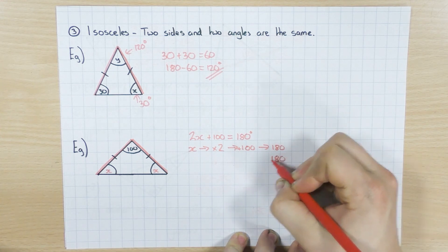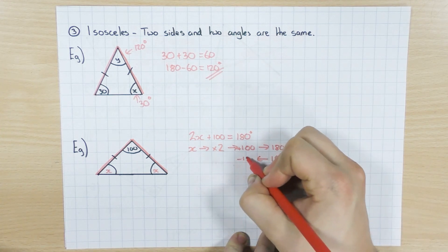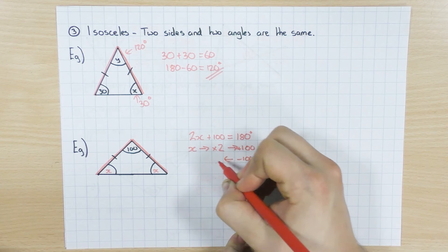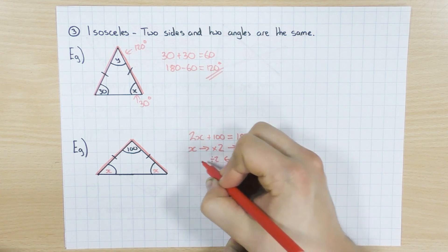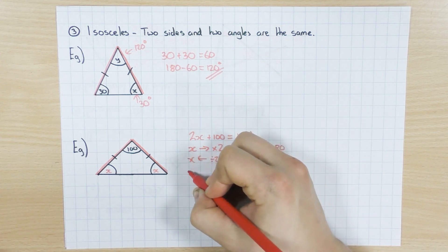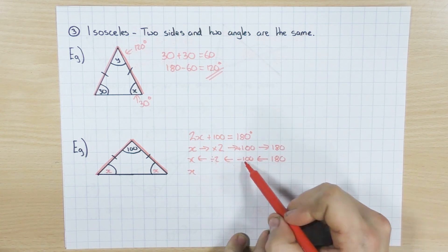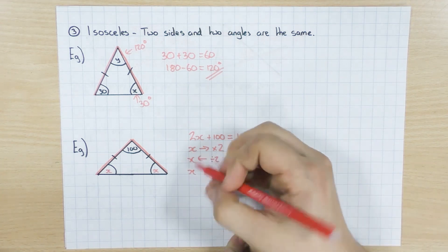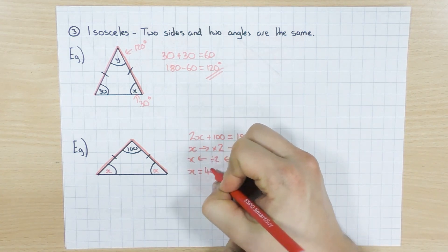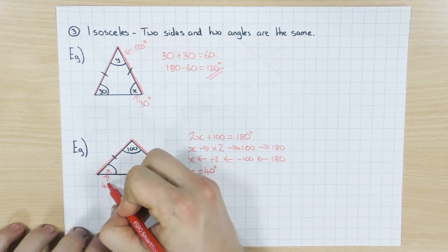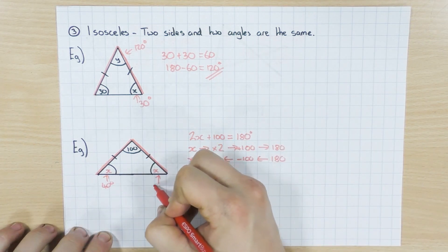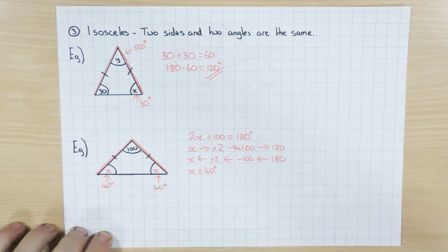So going backwards, 180, do the opposite, minus 100, do the opposite, therefore I divide by 2. And I get back to x. So what is that? 180 minus 100 is 80 divided by 2, leaves me with 40 degrees. Because obviously it's angles. So that would be 40 degrees. And that would also be 40 degrees.